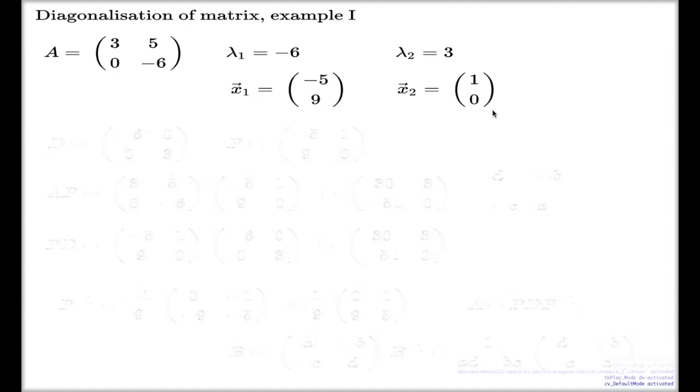That's why in this case, diagonalization is achievable. And all you have to do, you have to take D matrix, which is diagonal with the eigenvalues on the diagonal, negative six and three. Here it is. And P matrix, which consists of the eigenvectors as columns.